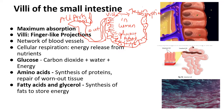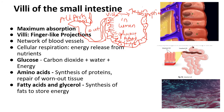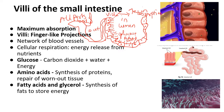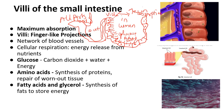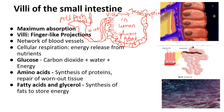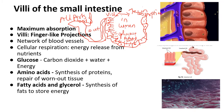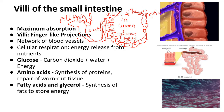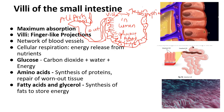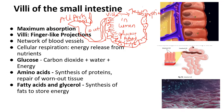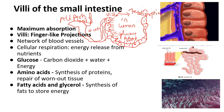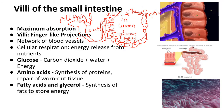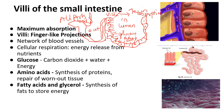Maximum absorption occurs in the small intestine because the walls of the cells are covered with numerous finger-like structures called villi. Attached to these villi is a network of blood vessels. Once the villi absorb glucose, fatty acids, and amino acids, these are transferred to blood vessels — arteries, veins, and capillaries — which then transport them to all parts of the body.